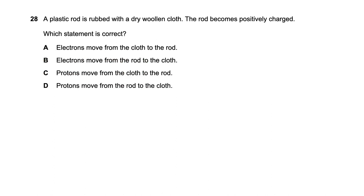Question twenty-eight: a plastic rod rubbed with dry woolen cloth becomes positively charged. Eliminate options C and D which mention protons. The rod becomes positive not by gaining protons but by losing electrons. Electrons move from the rod to the cloth. So option B is the right answer.